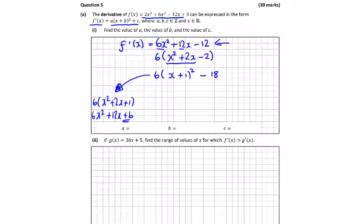So you can see here that a is equal to 6, b is equal to 1, and c is equal to minus 18.